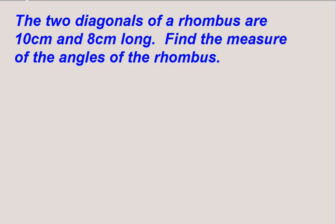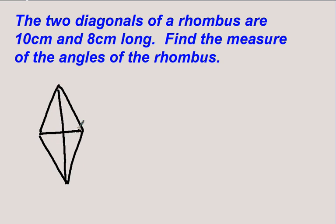Let's solve this problem: the two diagonals of a rhombus are 10 centimeters and 8 centimeters long — find the measure of the angles of the rhombus. Sketching it out, the long diagonal is 10 and the short diagonal is 8. Since the diagonals of a rhombus are perpendicular and bisect each other, we take one quarter of the rhombus: half the longer diagonal is 5, and half the shorter diagonal is 4.